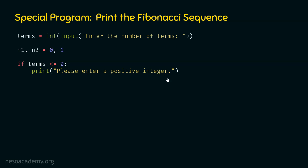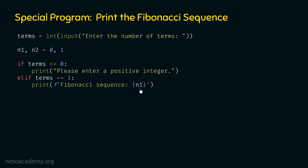After this, we also need to check if terms is equal to one. If the user has entered one, we must print zero on the screen, because the user wants just one term of the Fibonacci sequence. We must not perform any calculations in that case. So we need this elif statement: elif terms == 1, then print the Fibonacci sequence which is n1. If these two conditions are not satisfied, terms will be two or greater, so we move to the else block where we write the code to print the Fibonacci sequence as desired.